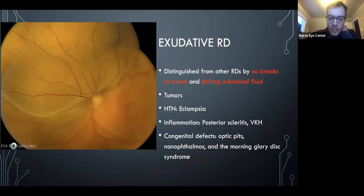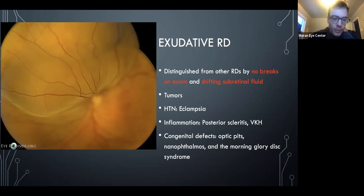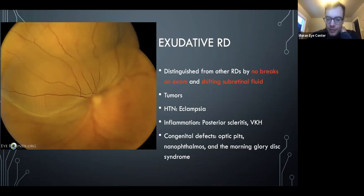Exudative RDs can be associated with tumors, hypertension, especially eclampsia, posterior uveitis, and anatomical defects like optic pits, nanophthalmos, and morning glory syndrome — things that allow fluid under the retina. Nanophthalmos increases outflow resistance, contributing to fluid buildup under the retina.